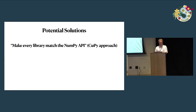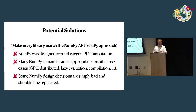Another solution is: maybe we won't merge everything into NumPy, but we could copy the NumPy API, which is sort of the CuPy approach. But the problem is that NumPy was designed a long time ago around a very specific model of eager CPU computation. A lot of these semantics are really just inappropriate for other use cases such as GPUs, compilation, or lazy evaluation. And honestly, some design decisions in NumPy were just bad, and we probably shouldn't replicate them.